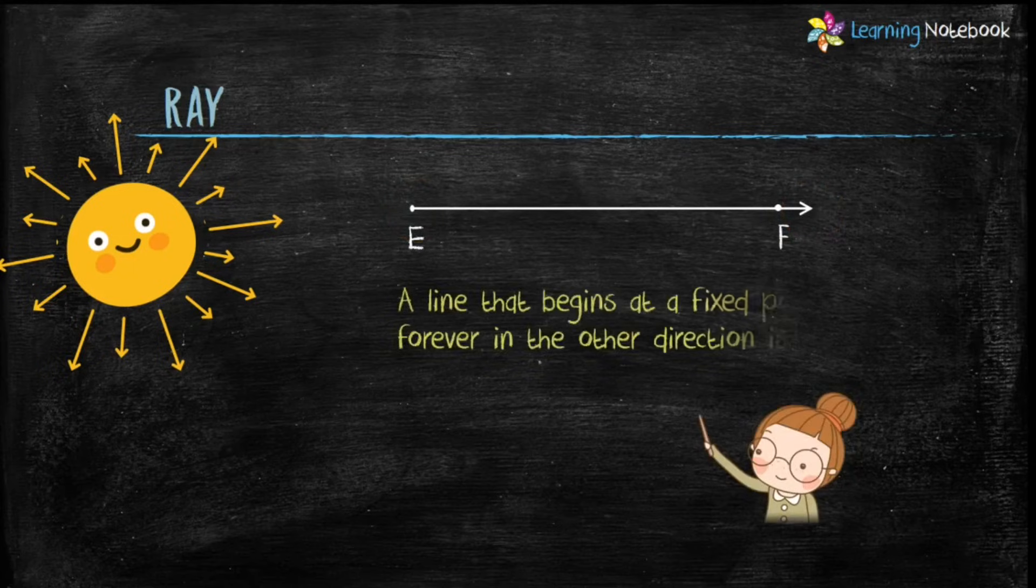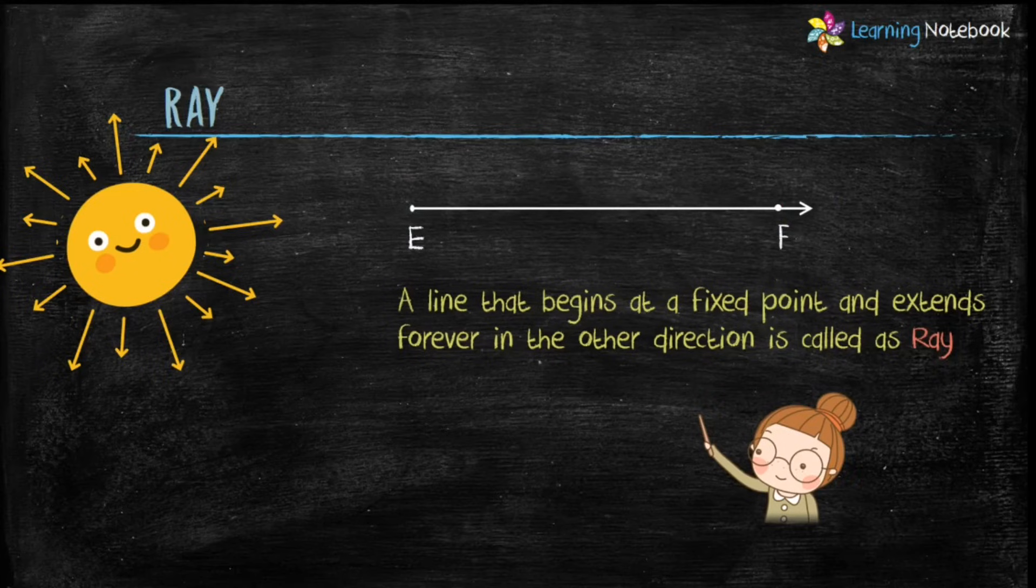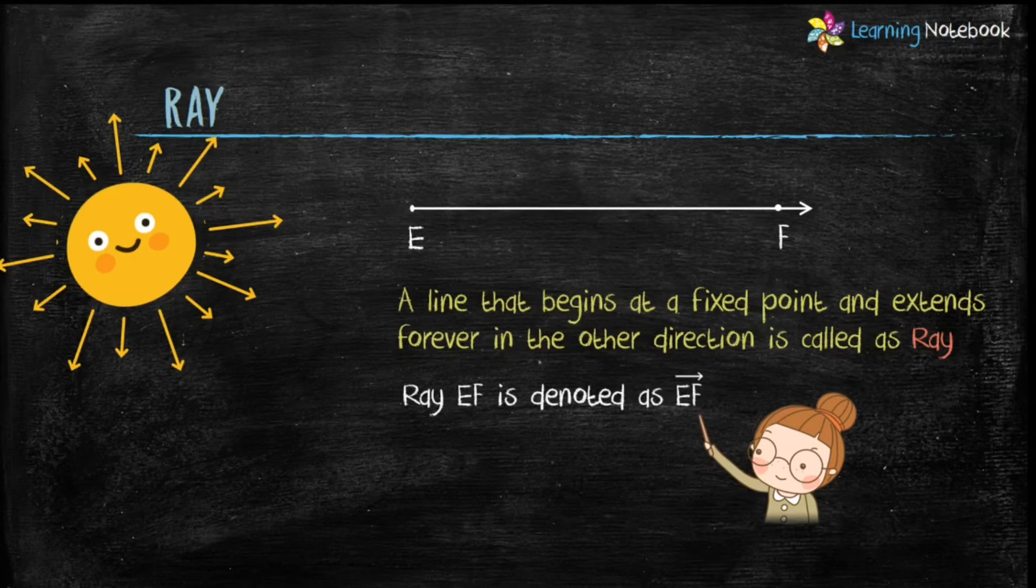Or we can say a line that begins at a fixed point and extends forever in the other direction is called a ray. Ray EF is denoted as EF with a small ray on it.